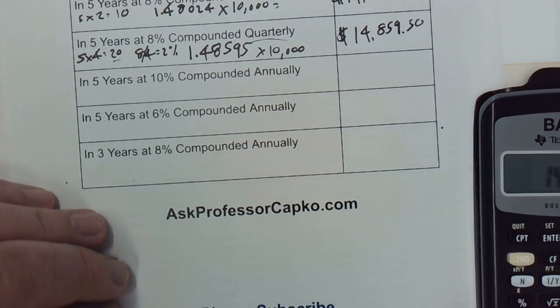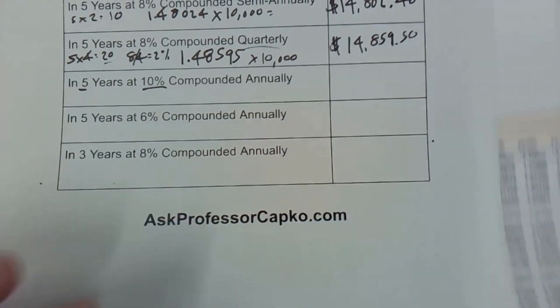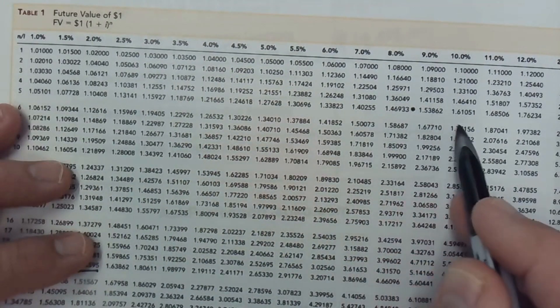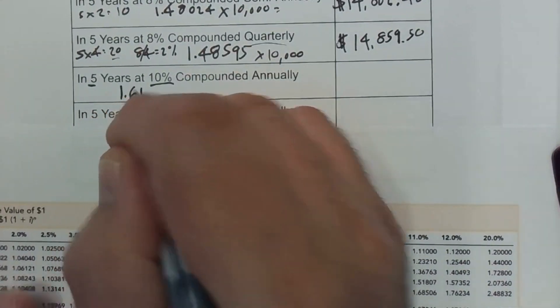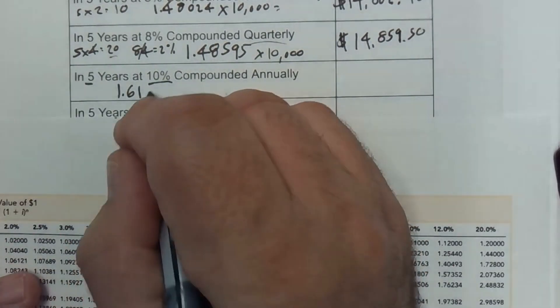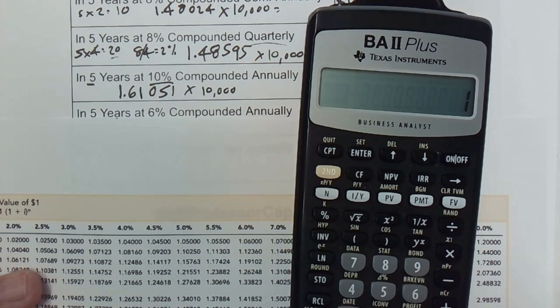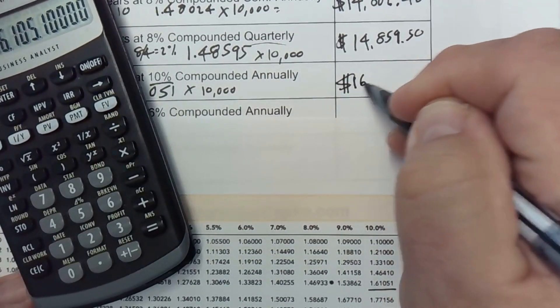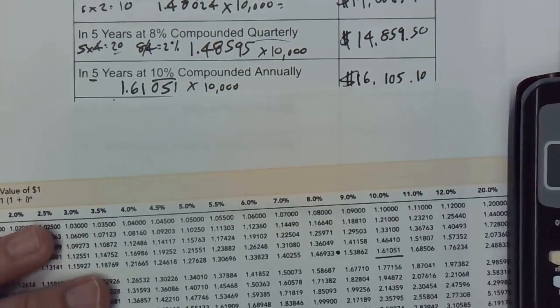Now we're going to change the interest rate to 10% back to being compounded annually. We're going to look at our table and find five as the number of periods because it's once a year, and come across to 10 as our interest rate. So that's 1.61051, and I'm going to multiply that by the 10,000. 1.61051 times 10,000 equals $16,105.10. So that's going up quite a bit because of the higher interest rate.